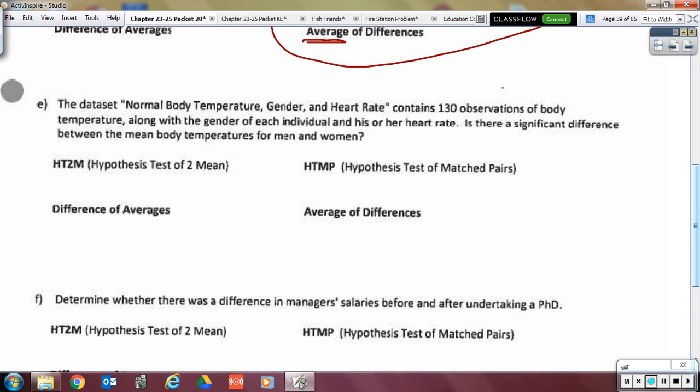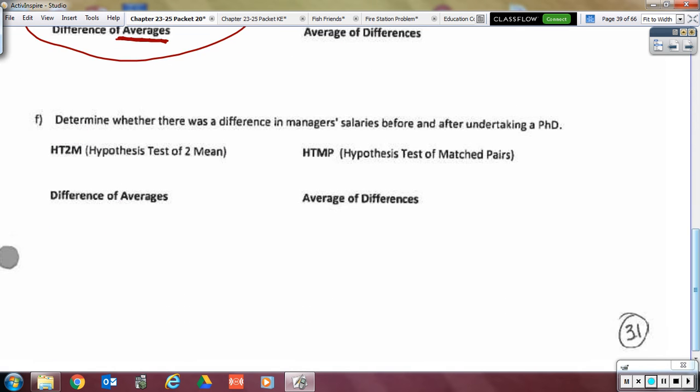Here, we have information. We get an average of the men and an average of the women. So, what does that mean? Two separate means, and we'll get the difference between two separate averages. And then, finally, we're going to have a manager's salary before and after that particular manager takes a Ph, getting a Ph.D. So, what's that one? Match pairs, and we're going to get the average of the differences in their salaries. All right. Very good.